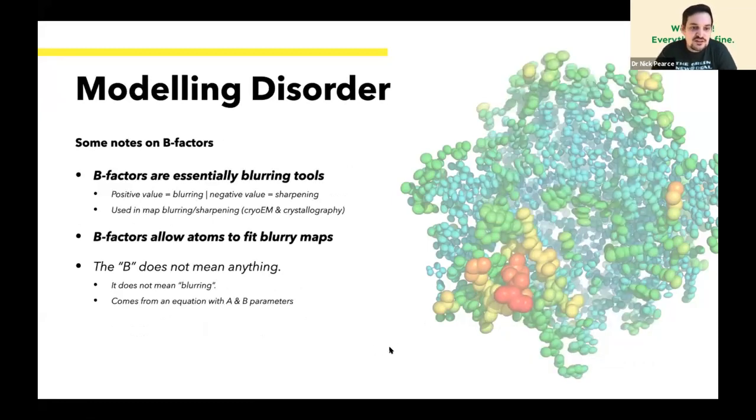Some quick notes on B-factors. If you have a B-factor with a positive value, they're generally used for blurring. B-factors of negative values can be considered to be sharpening, particularly when we're talking about map blurring or sharpening in cryo-EM or crystallography. Of course, if we're talking about atomic B-factors, we can only have blurring of an atom. You cannot sharpen an atom. The B, as far as I'm aware, does not actually mean anything. I think it comes from an equation that had ae to the minus bx squared, and so it's just the second parameter in an equation, hence the B.